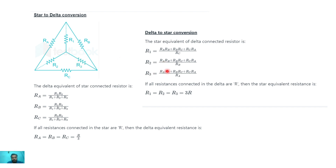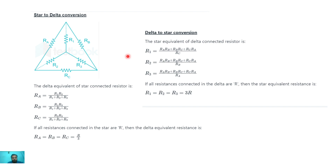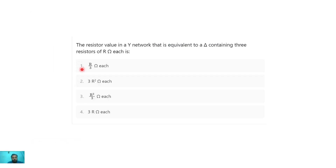To calculate R3: R3 equals (Ra·Rb + Rb·Rc + Rc·Ra) / Ra. If all the resistances connected in delta are R, then the star equivalent resistance is R1 = R2 = R3 = 3R. So the resistor value in a star network equivalent to a delta containing three resistors of R ohm each is R/3 ohm — option one is correct.